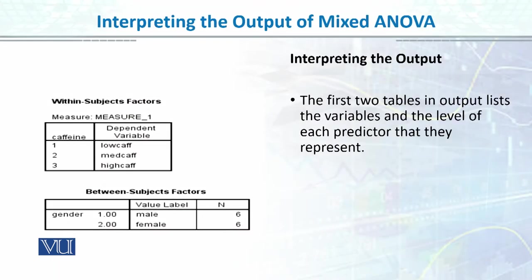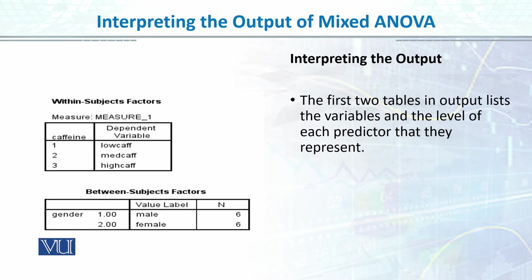The first table is exactly the same as ANOVA one-way or two-way — it gives the number of variables and their levels. The second table shows that your caffeine within-subject variable has 3 levels, and your between-subject variable has 2 levels, which are male and female.